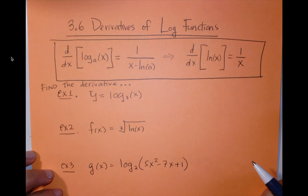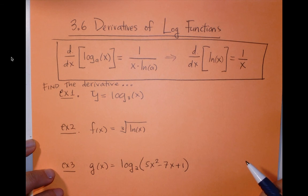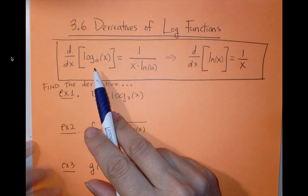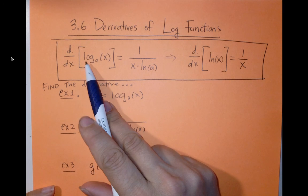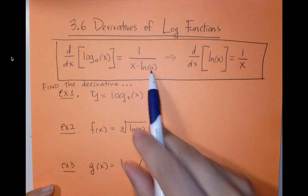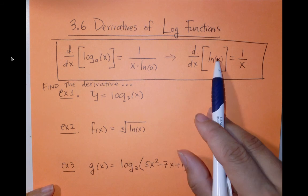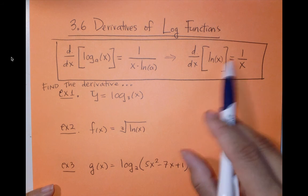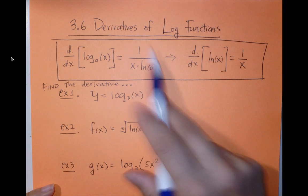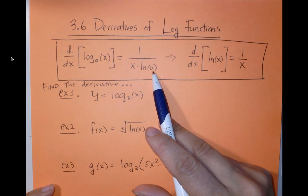Section 3.6 is about derivatives of logarithmic functions, and I'm just going to give them to you right up front. The derivative of log base a of x is equal to 1 over x times ln a, and the derivative of the natural log is just 1 over x. You can see that this follows from this derivative because natural log of e is just equal to 1.